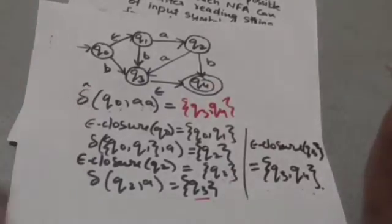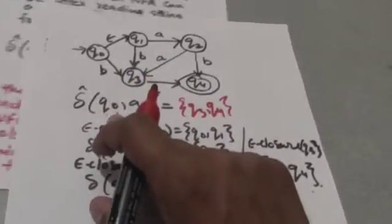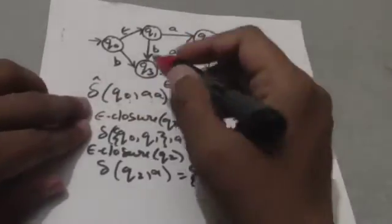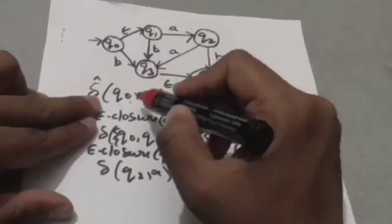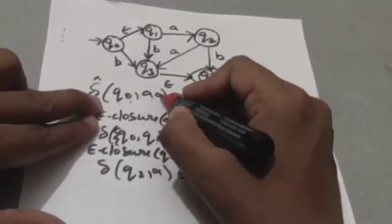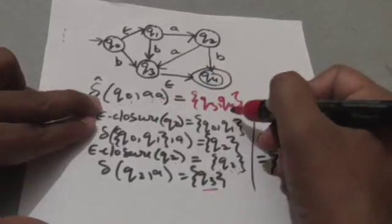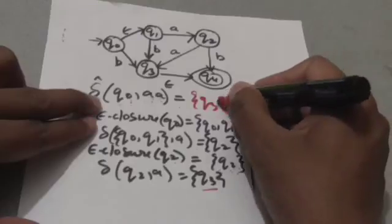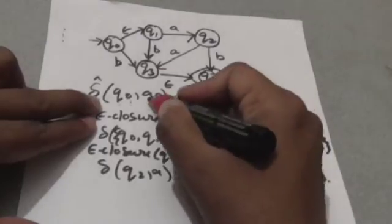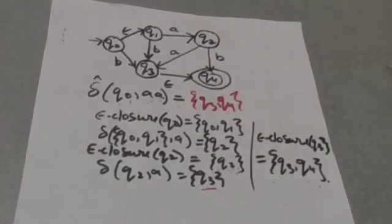Q0 is the initial state. The output of the extended transition function for the initial state and a string of input symbols AA is a set containing one final state, Q4. So the string AA will be accepted by this NFA. Thank you very much.